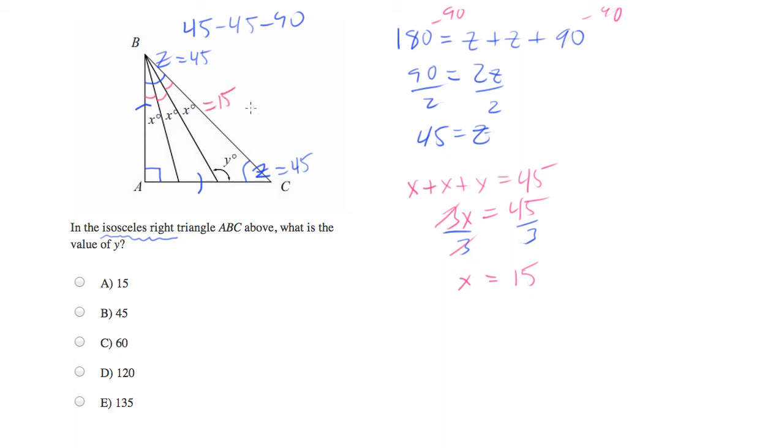So if x is 15 and z is 45, now we should be able to calculate y using the same rule that we did before, which is the sum of angles in a triangle must equal 180. So I'm going to do the triangle on the right here, which has a measure of 15 plus 45 plus y. That must equal 180. And if we subtract 15 and 45 from both sides, we'll see that y is equal to 120, which will be answer choice D.